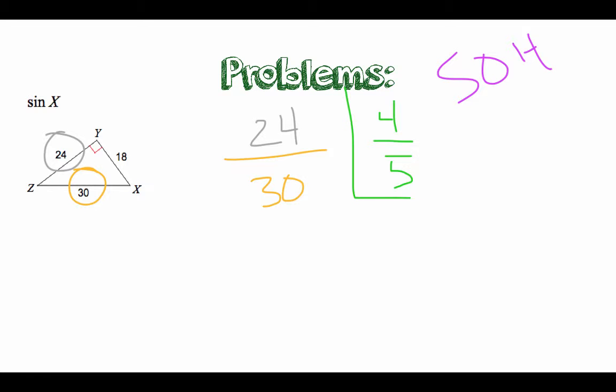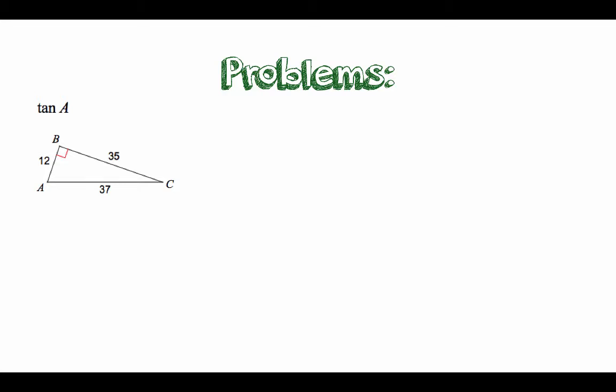So that is complete. Last but not least, we have our tangent problem here. Tangent is the TOA part, opposite over the adjacent. So when we look at the opposite of A, it's going to be 35. The adjacent of A is going to be 12, so 35 over 12.